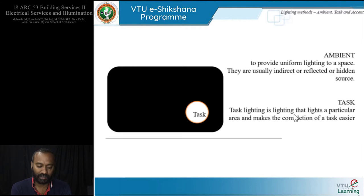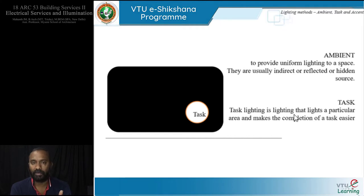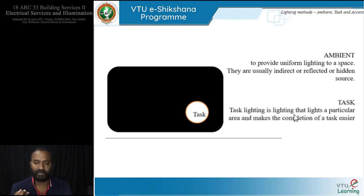Moving on, the next type is task lighting. The entire backdrop becomes dark with just one particular area lit by a spotlight for a specific task. We've seen this in music concerts or magic shows where only the artist is lit. A better everyday example is our table lamp at a work desk, which helps in performing an activity like reading. By definition, task lighting illuminates a particular area and makes completion of a task easier.